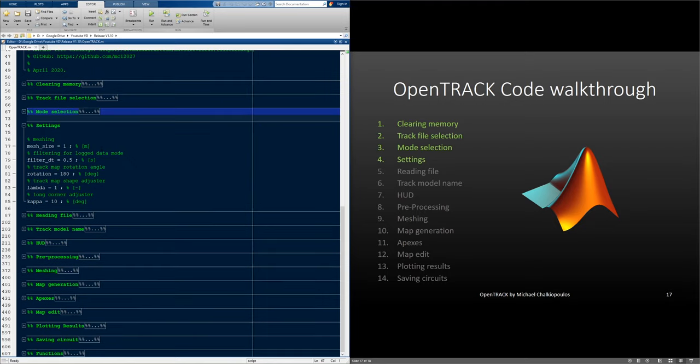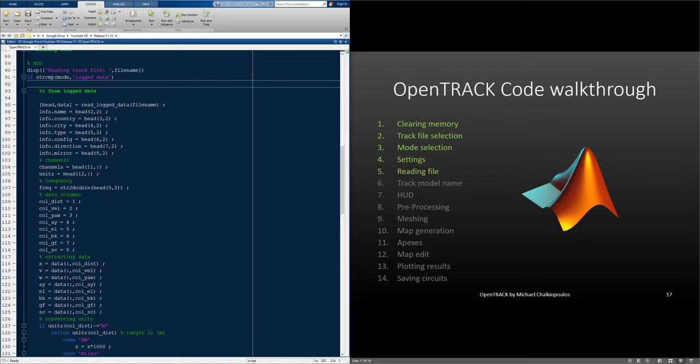After, in the settings, we set the mesh size, the filtering duration, the visual map rotation, the shape factor lambda, and the long corner angle adjuster kappa. Then, we read the specified file.